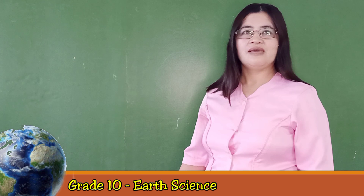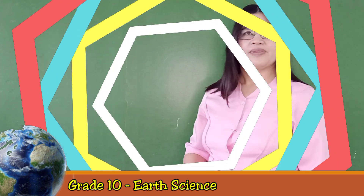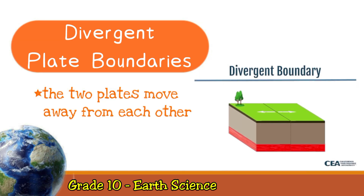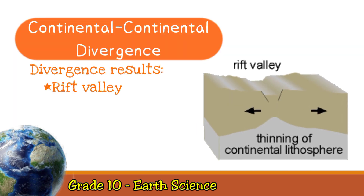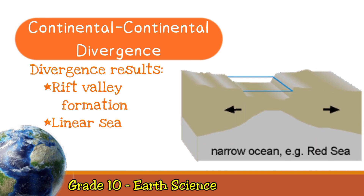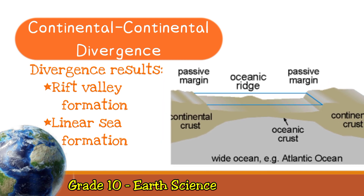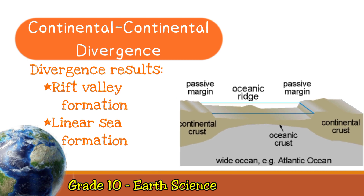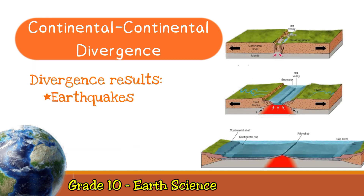A lot of activities can happen at a convergent plate boundary. Is this also the same for a divergent plate boundary? Let us investigate. Divergence takes place when plates move away from each other. When two continental plates separate or diverge, it results in the formation of down-faulted valleys called rift valleys. As the rift valley increases in length and depth as spreading continues, it develops into a linear sea, and earthquakes may also be produced because of fracturing and movement.